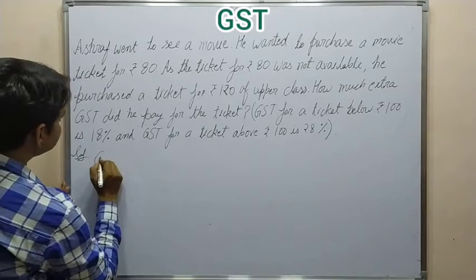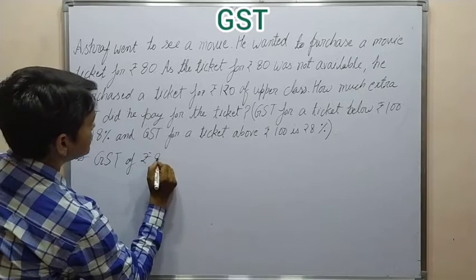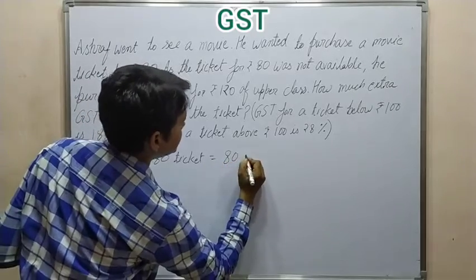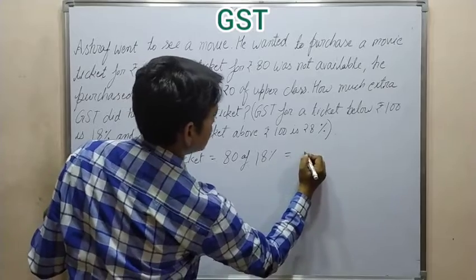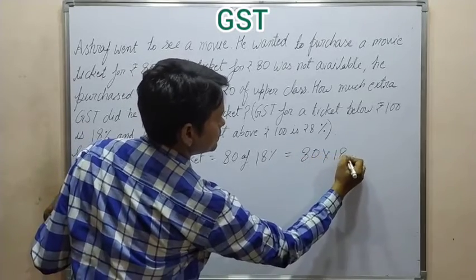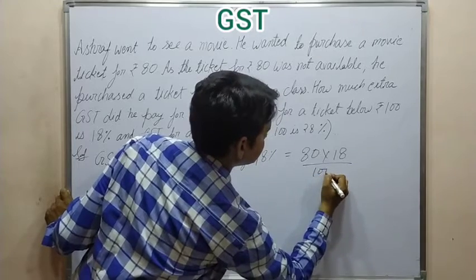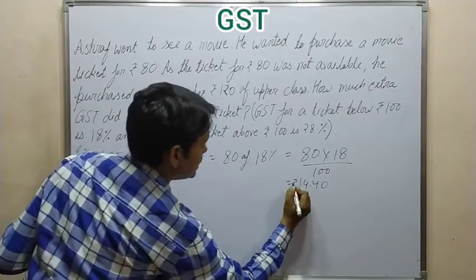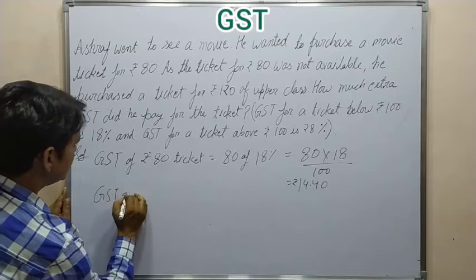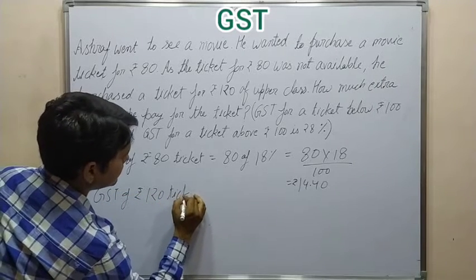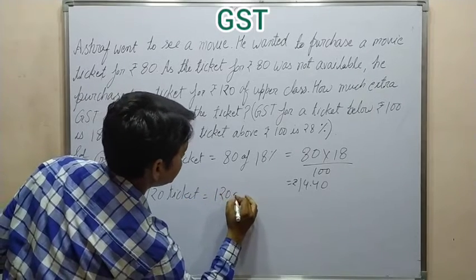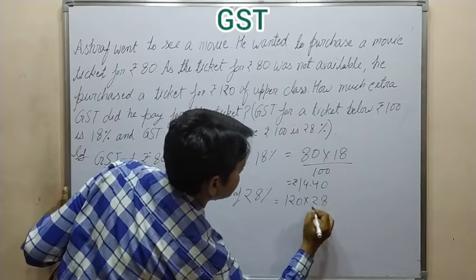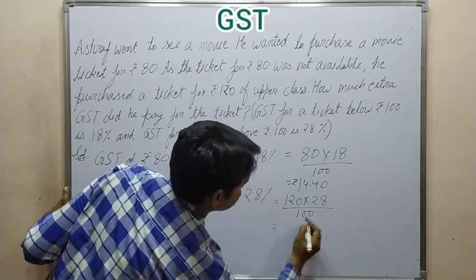So, GST of Rs. 80 ticket is equal to 18% of 80, which is 80 into 18 divided by 100, giving Rs. 14.40. Now GST of Rs. 120 ticket is equal to 28% of 120, which is 120 into 28 divided by 100, giving Rs. 33.60.